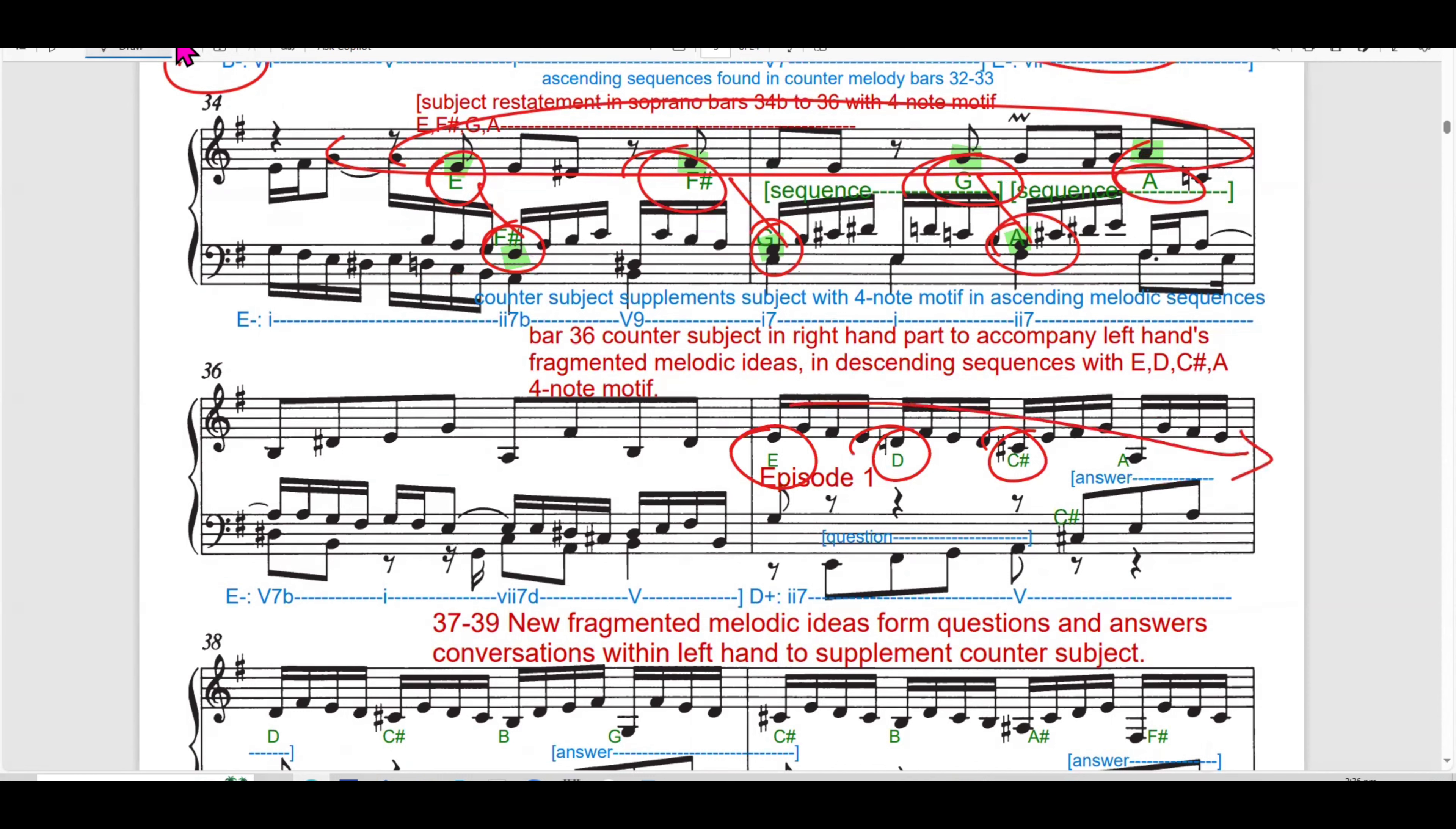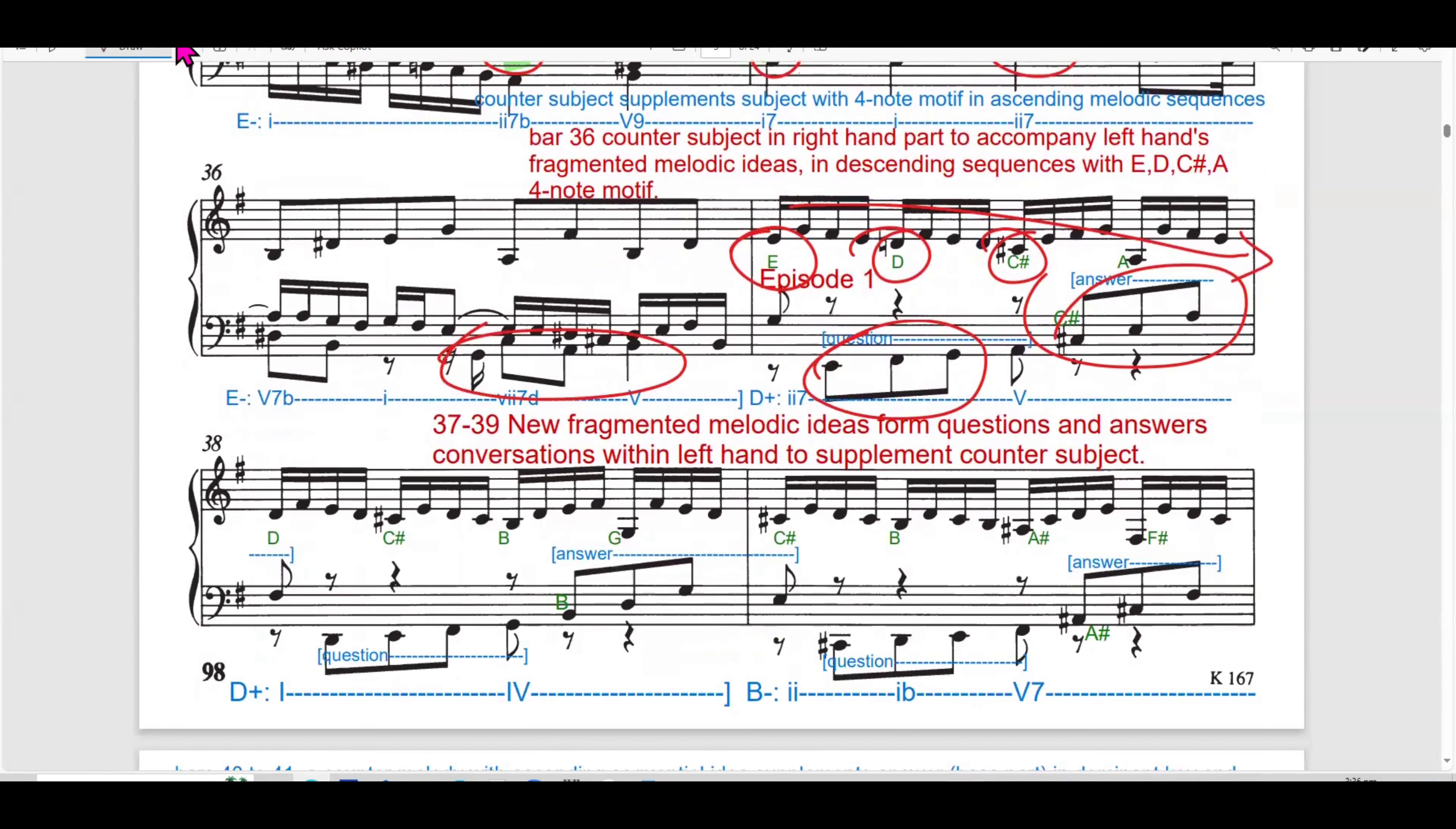The counter subject introduces ascending sequences that are mirrored by the bass line, adding depth to the polyphonic interaction. The ascending motion builds tension and the sequences allow Bach to explore the harmonic possibilities within B minor while leading towards a cadence. In bar 32 to 33, the ascending sequence in the counter melody continue to develop.